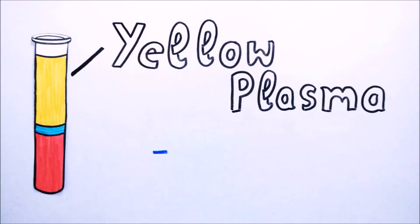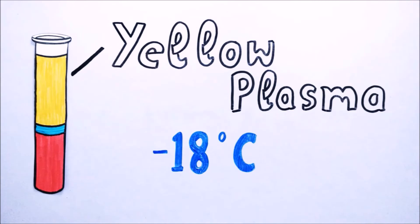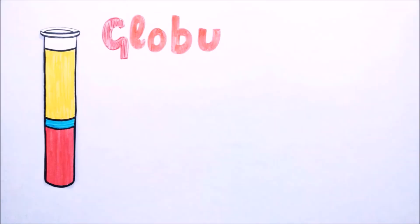The uppermost layer which is about 55% of blood is yellow plasma. This is kept at minus 18 degrees Celsius or lower temperature.